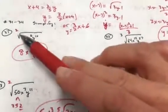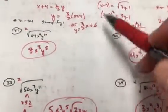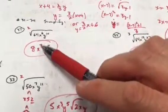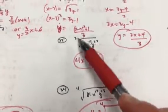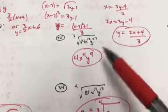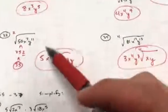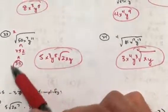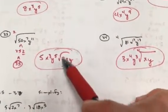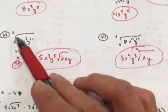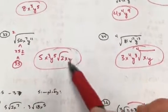Numbers 31 and 32 break down cleanly. Remember there's an imaginary index 2 when you take the square root: √64 = 8; 2 goes into 6 three times, 2 goes into 10 five times. The cube root of 64 is 4; 3 goes into 12 four times, 3 goes into 27 nine times. For 33 and 34, √50 gives a 5 outside and 2 inside; 2 goes into 7 three times for x with 1 left over, and 2 goes into 11 for y five times with 1 left over.